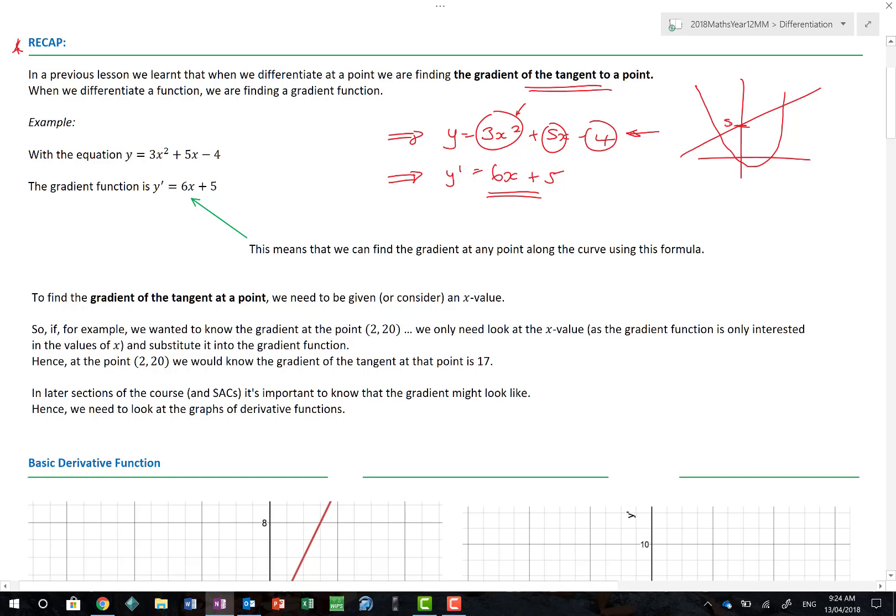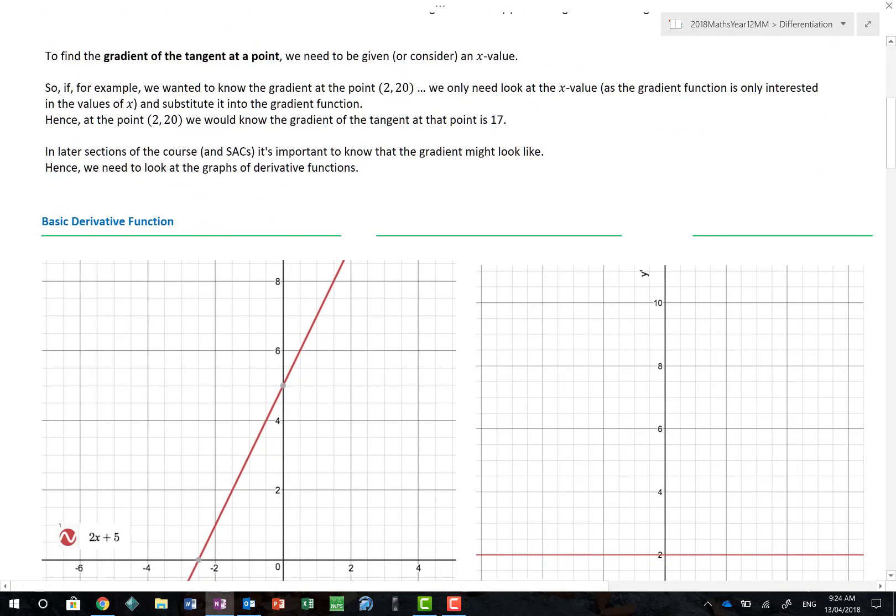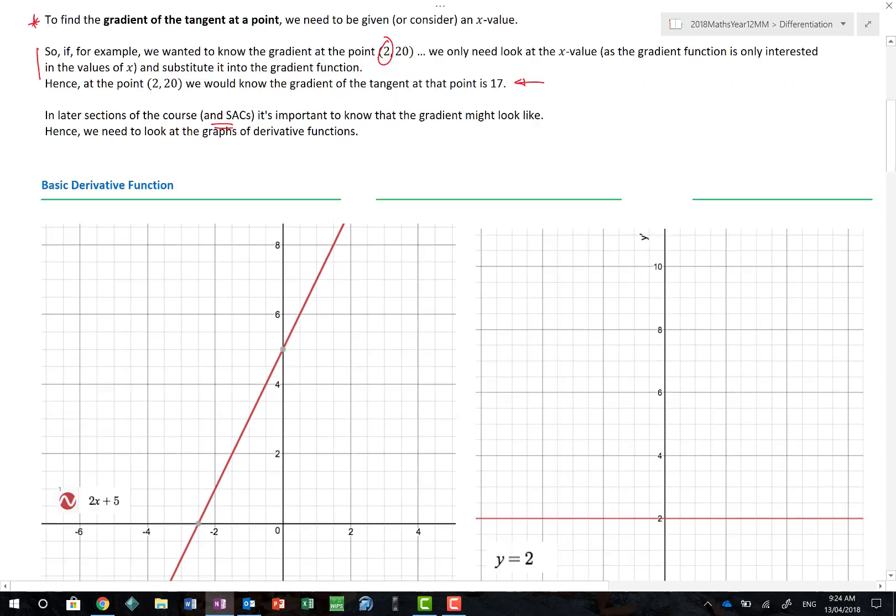But what it's suggesting is, because this is a quadratic - how do we know it's quadratic? It's got a floaty 2 - we know that when we do the graph of the gradient function we end up with a straight line. So if I was to then plot that on the same graph it would go something like that. And very much a case of these graphs of differential functions can be really helpful to us later on in the course.